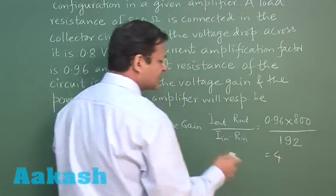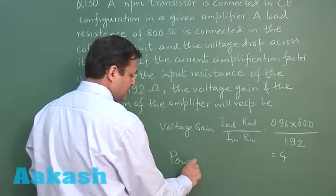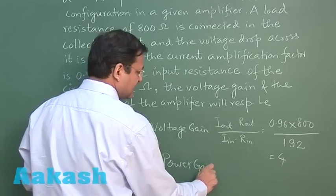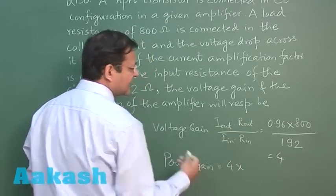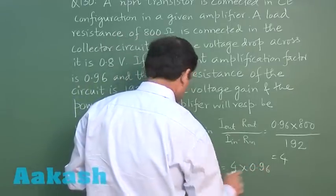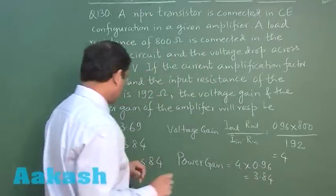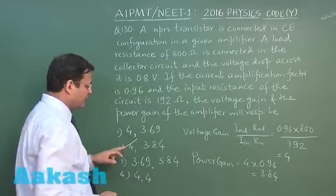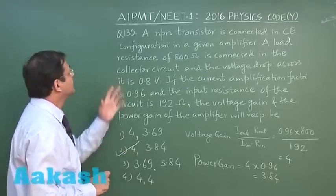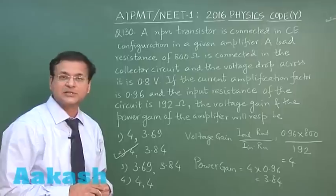So this is equal to 4, voltage gain is 4. And power gain is nothing but voltage gain multiplied by current gain. Current gain is 0.96, so that will become 3.84. So the correct answer for this will be option 2: 4 and 3.84.